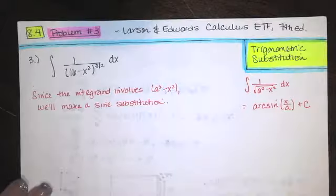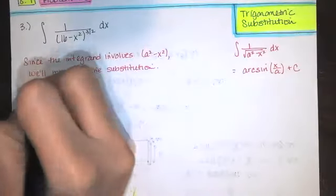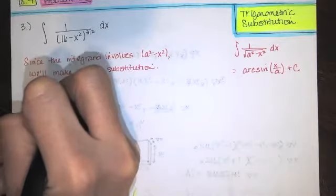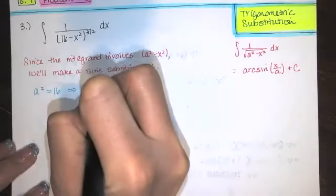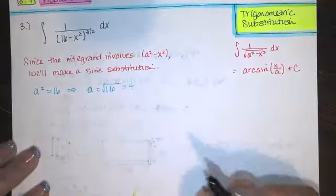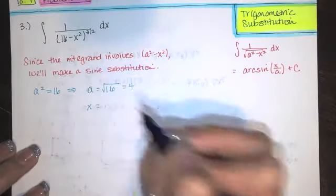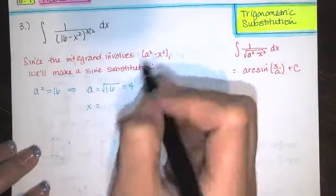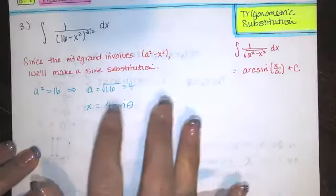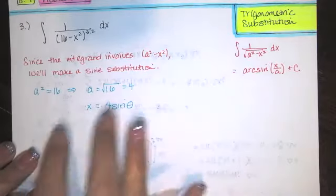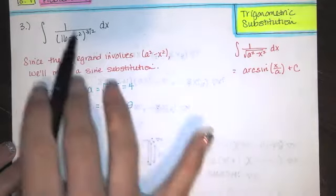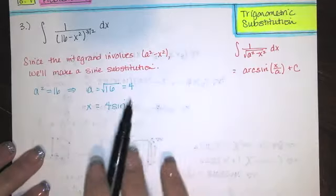In order to do the substitution, we need to identify a. We see that a squared is 16; a is always positive, so a is the positive square root of 16, which is 4. Then we let x equal a, which is 4, times sine of theta. Whenever you're making your sine substitution, x is always equal to a times sine of theta.